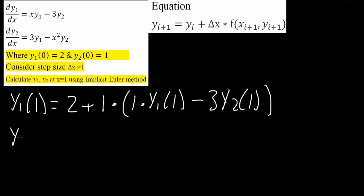So same idea. y2 parenthesis 1. And that's going to equal to yi. So yi was 1. So y2 parenthesis 0 is equal to 1. So we say it's equal to 1 plus. So the step size was 1. So plus 1 times the equation. This equation right here. So 3 times y1 parenthesis 1 minus x squared. x was 1, so 1 squared times y2 for 1. Like this.